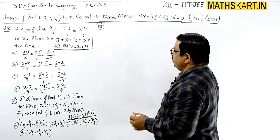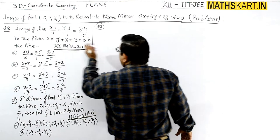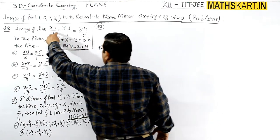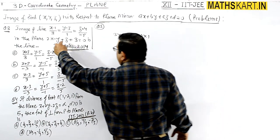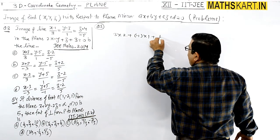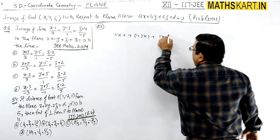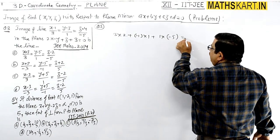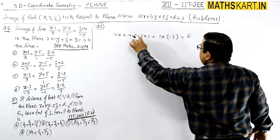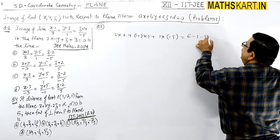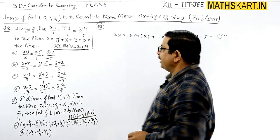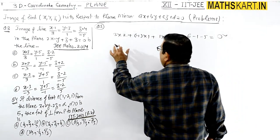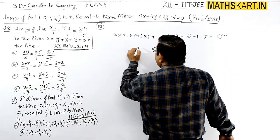Let's check here: 3 × 2 plus (-1) × 1 plus 1 × (-5). Check this value: 6 - 1 - 5, so it equals 0. Now it is confirmed that the line is parallel to the plane.